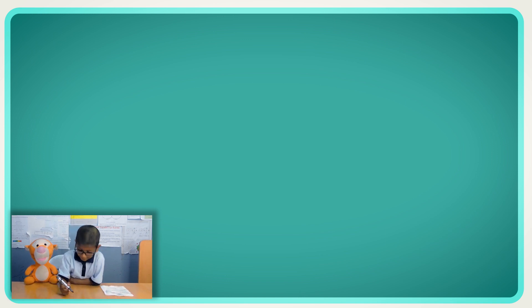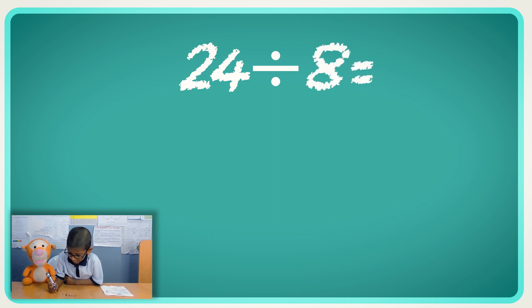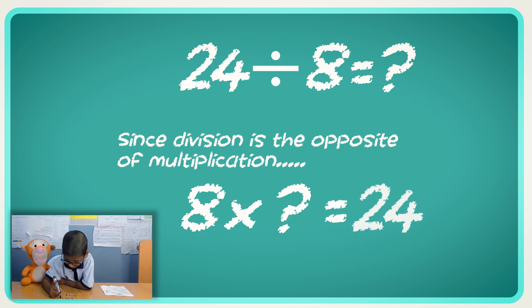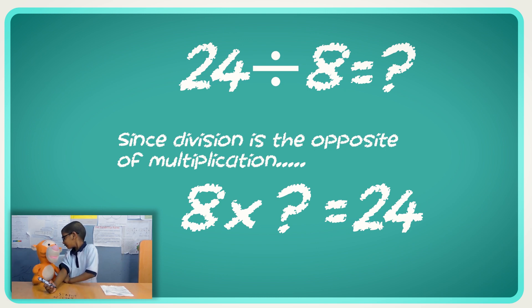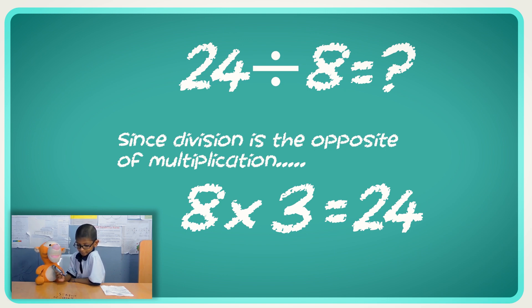Let's try this one. Come on down. 24 divided by eight. That's exactly the same kind of problem. 24 divided by eight equals... 8 times what is 24? So it will be 3. Because 3 times 8 is the same thing. Yeah.